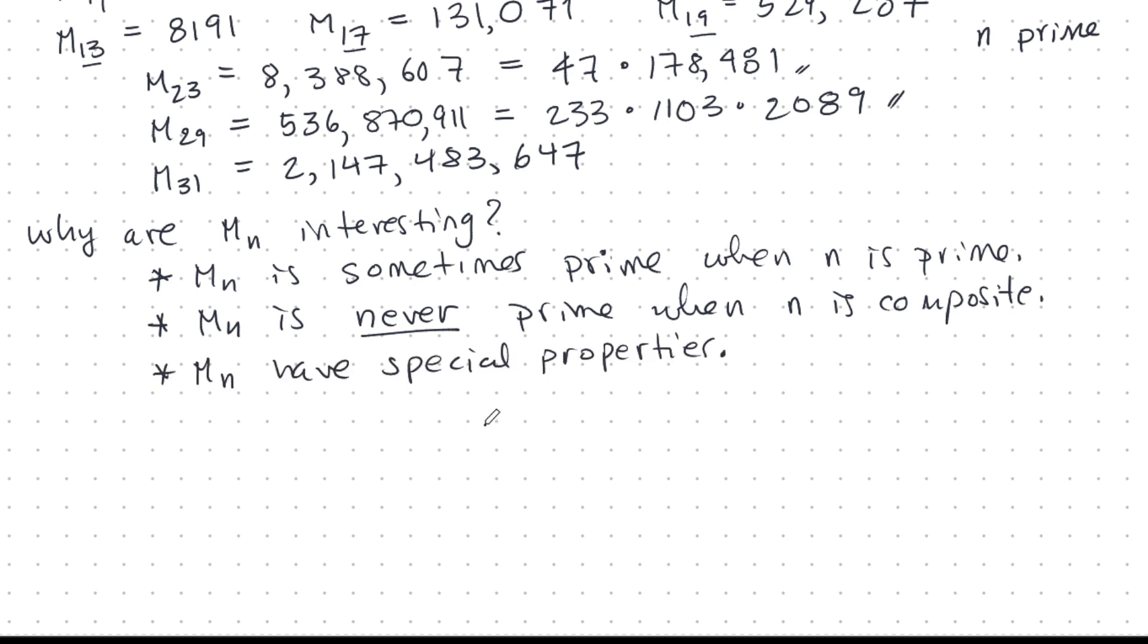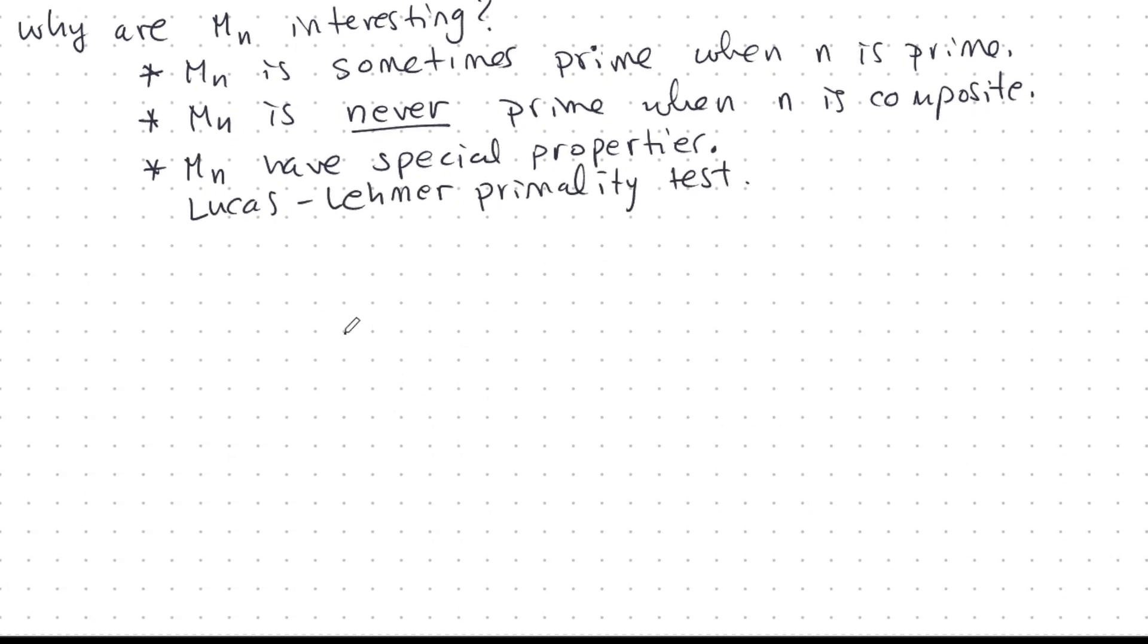Right there, we can actually know more about Mersenne numbers than we can about Fermat numbers. There's very little known about Fermat numbers. Mersenne numbers have a lot of special properties, and these special properties allow very efficient primality tests. For example, the Lucas-Lehmer primality test. So, this is how we find these really huge prime numbers, and the largest known prime as of 2024 is, in fact, a Mersenne number. That's this one.